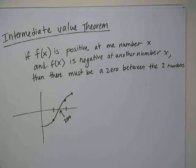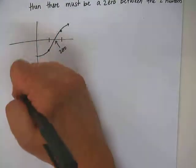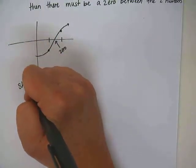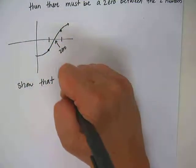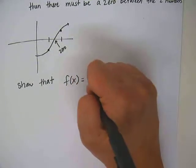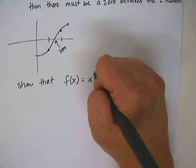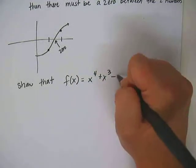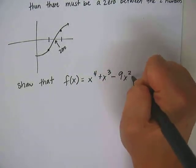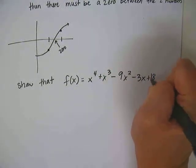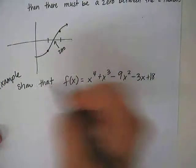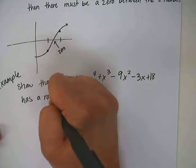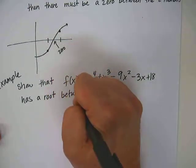Okay, the type of problem that you'll be doing in your book for these is it might ask a question like this. So it might say, show that f of x is equal to x to the 4th plus x to the 3rd minus 9x squared minus 3x plus 18. Show that this function has a root, remember root is just another name for 0, between negative 2 and negative 1.